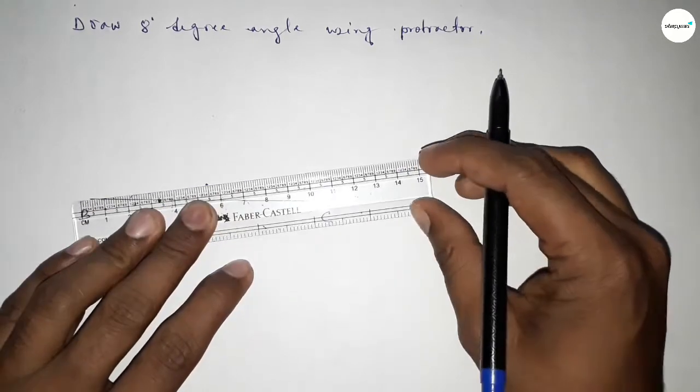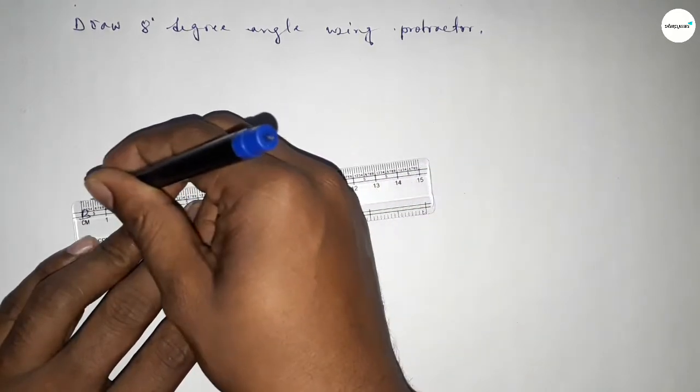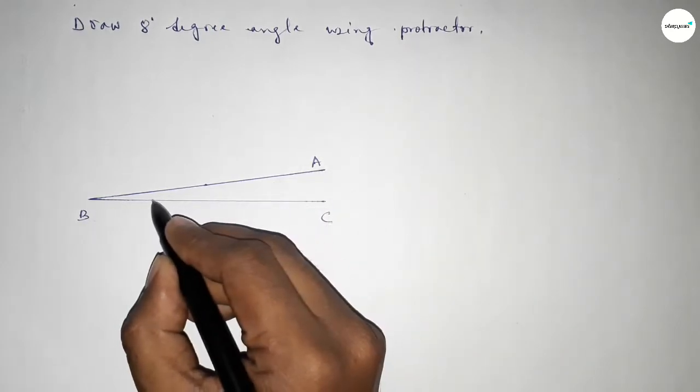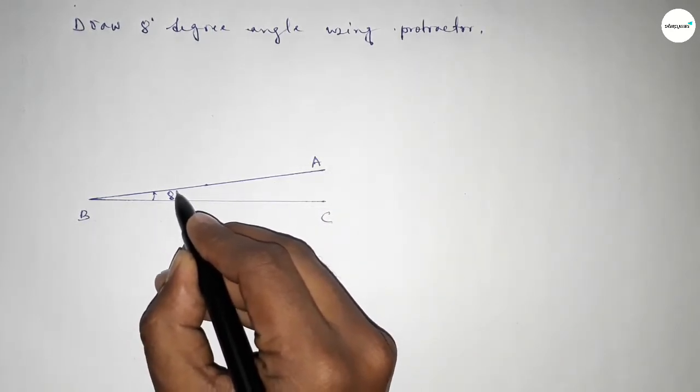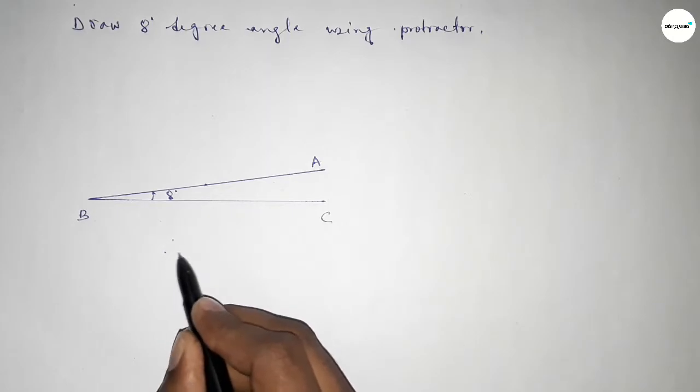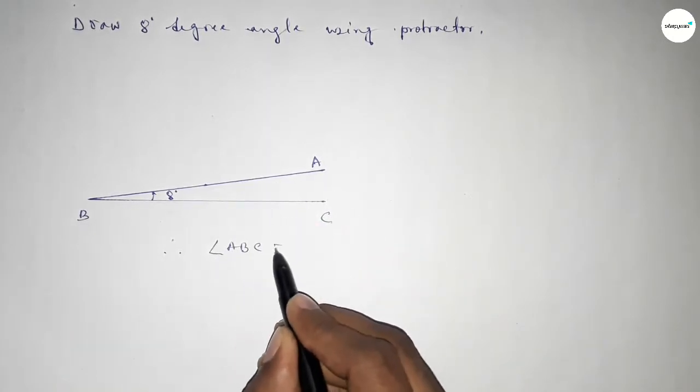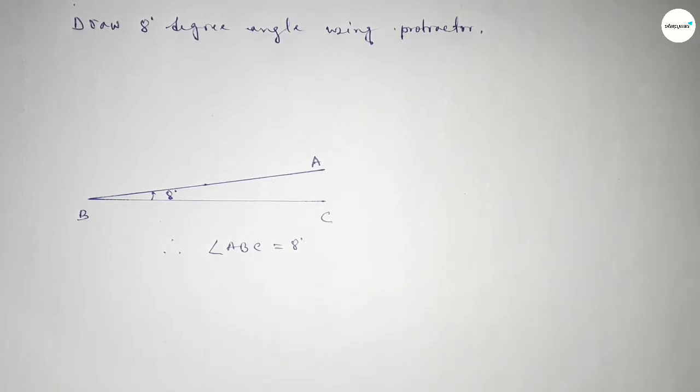Now joining this side to get 8-degree angle and taking here point A. So angle ABC, this is 8 degrees. Therefore angle ABC equals 8 degrees. That's all, thanks for watching. If this video is helpful to you, then please share it.